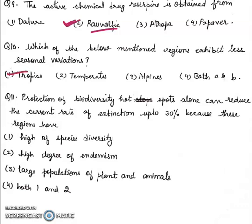Eleventh: Protection of biodiversity hotspots alone can reduce the current rate of extinction up to 30% because these regions have: high species diversity, high degree of endemism, large populations of plant and animals, both 1 and 2. Answer will be both 1 and 2.